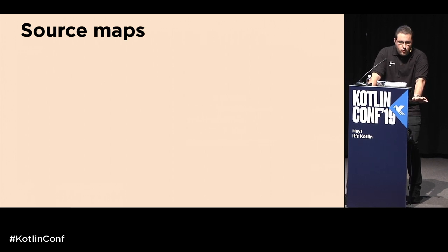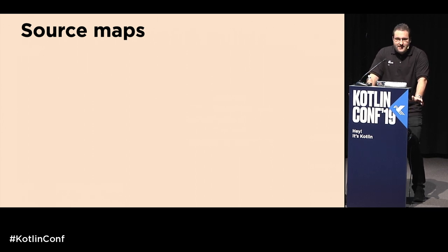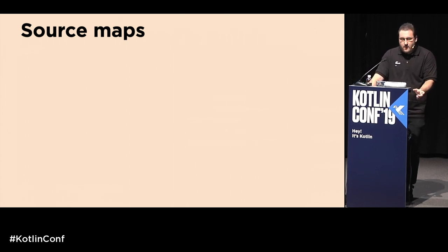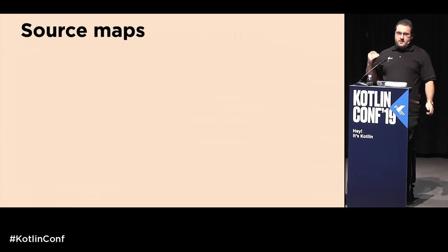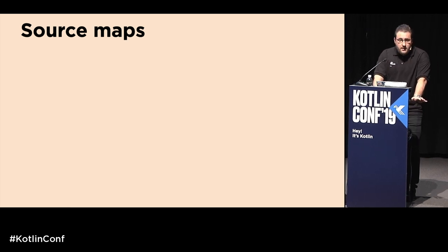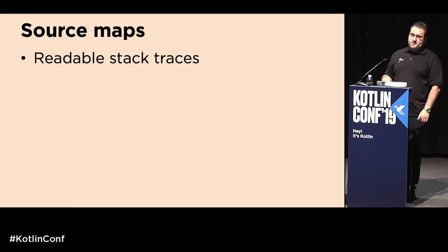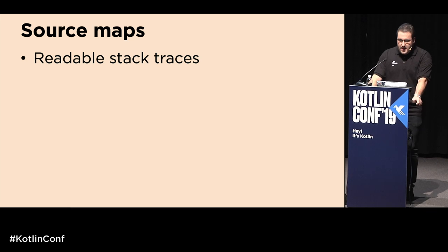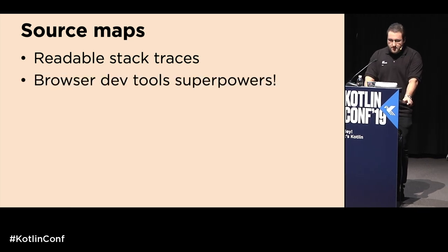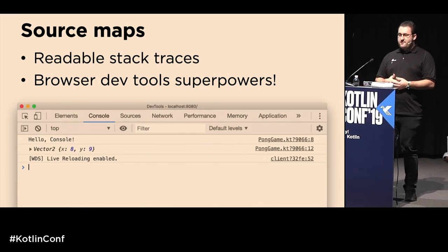Source maps are an important topic. Whenever code breaks or we want to inspect running code, we need tools that pinpoint the correct locations. As of Kotlin 1.3.60, source maps are automatically generated for any code targeting JavaScript — both Node.js and the browser — through the new plugin. For Node.js, this gives nicer stack traces, and for the browser it unlocks new superpowers from the browser dev tools.